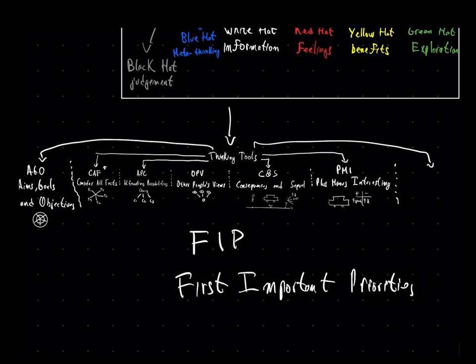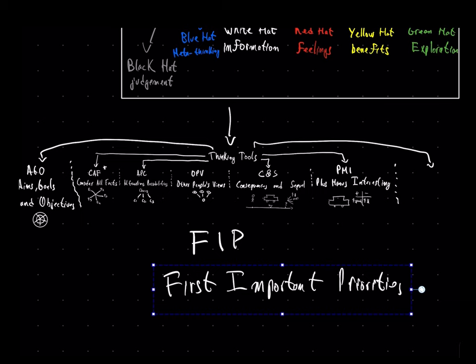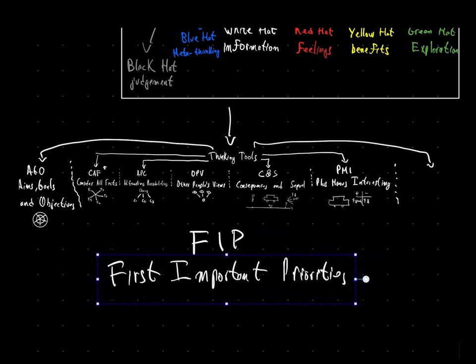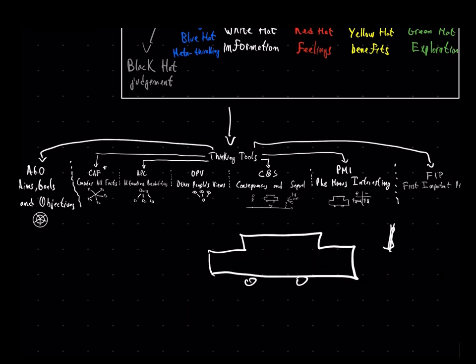Now, there's the FIP tool or first important priorities, which is about considering what are the priorities that you have to keep in mind when considering a problem or thinking about a situation. Imagine you're going to buy a car. So, what's your priority? Is your priority money? Is your priority social status? Is your priority efficiency? Those are some of the things you have to consider. And the FIP tool is the thinking tool that will allow you to do that.